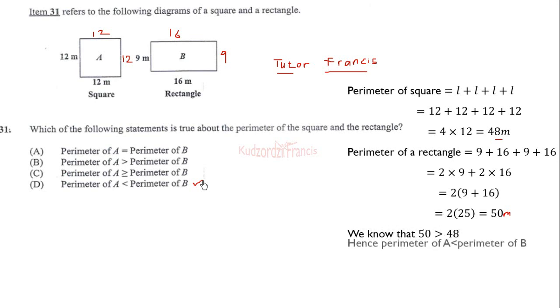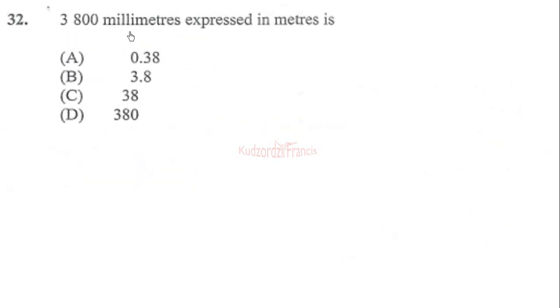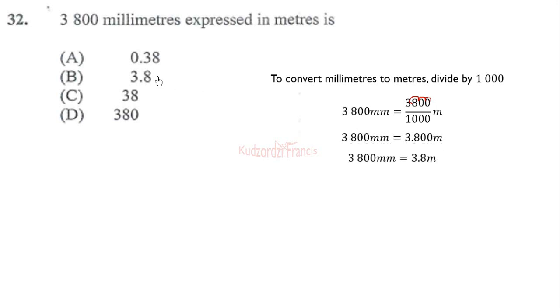Item 22: 3,800 millimeters expressed in meters is 0.38, 3.8, 38, or 380. Which is the correct answer? We recall that 1000 millimeters make one meter. To convert millimeters to meters, we divide by 1000. Therefore 3,800 millimeters equals 3,800 over 1000 meters. Dividing by 1000 means we move the decimal point back three times, so it will be between the 3 and 8. This is 3.8 meters. The correct answer is option B.